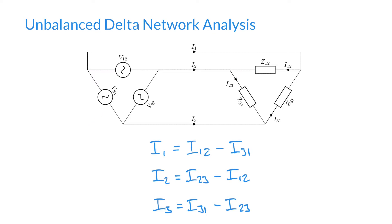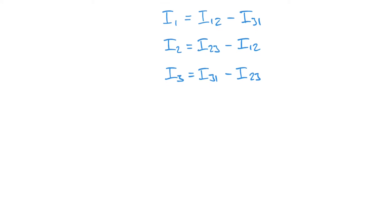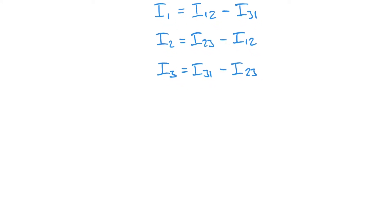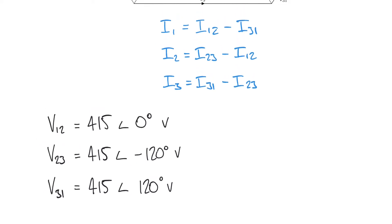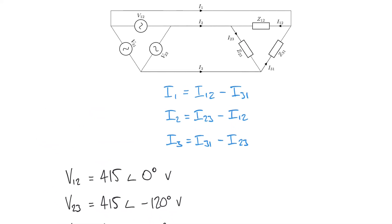We'll say that the voltage supplied is balanced but the impedances aren't. So let's say for the sake of example we have three voltages applied to this network, three line voltages of 415 volts, angles of zero degrees, minus 120 degrees and plus 120 degrees. They form our three voltages V12, V23 and V31.